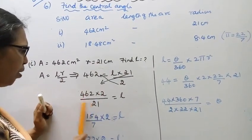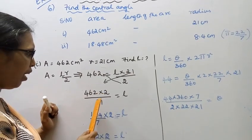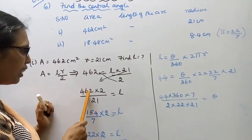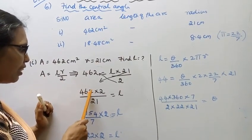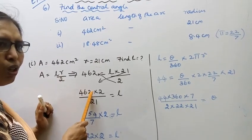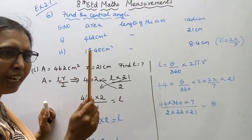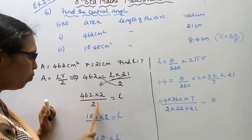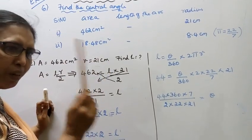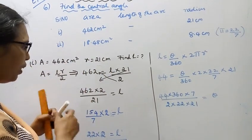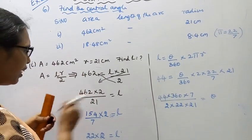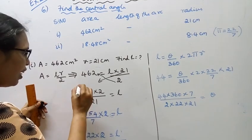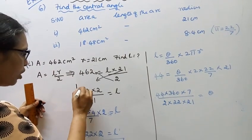Cancel — after cancellation, L equals 44.